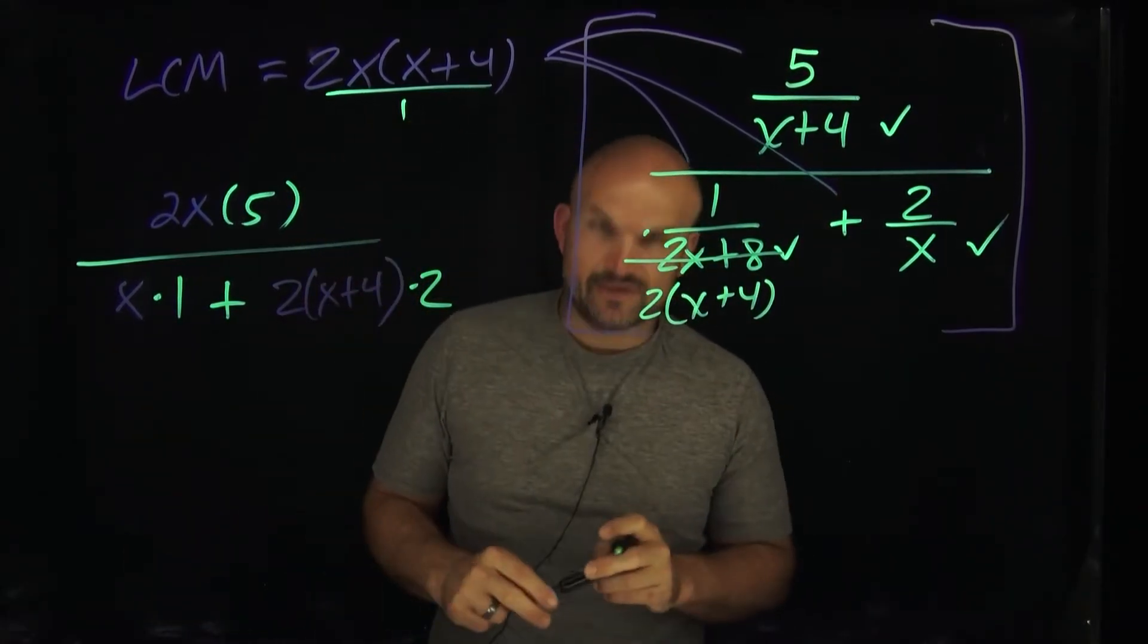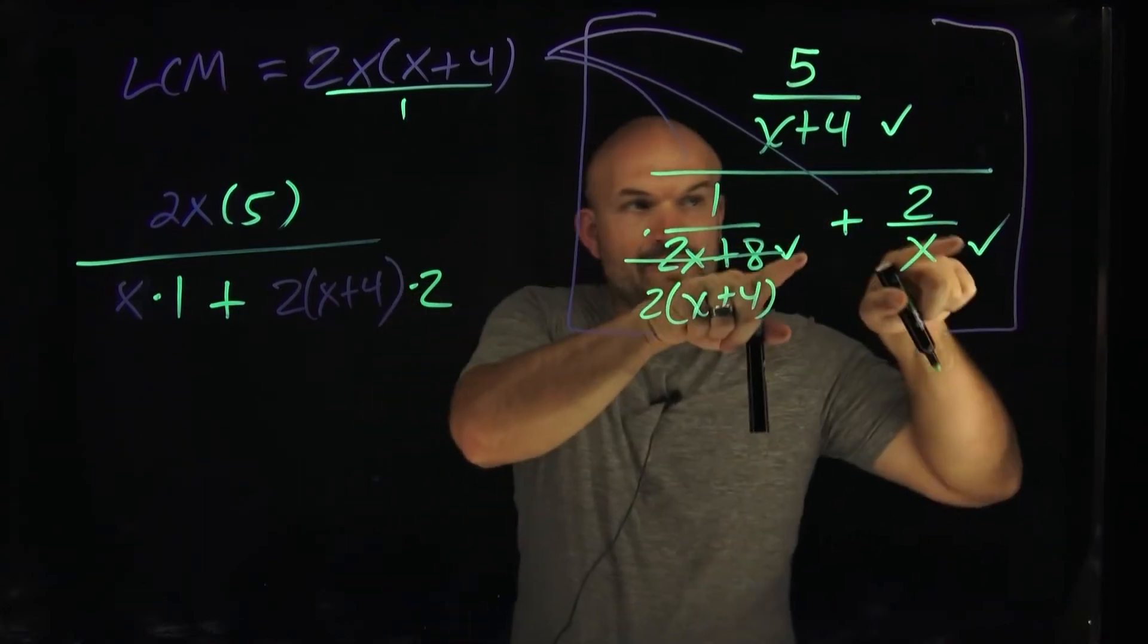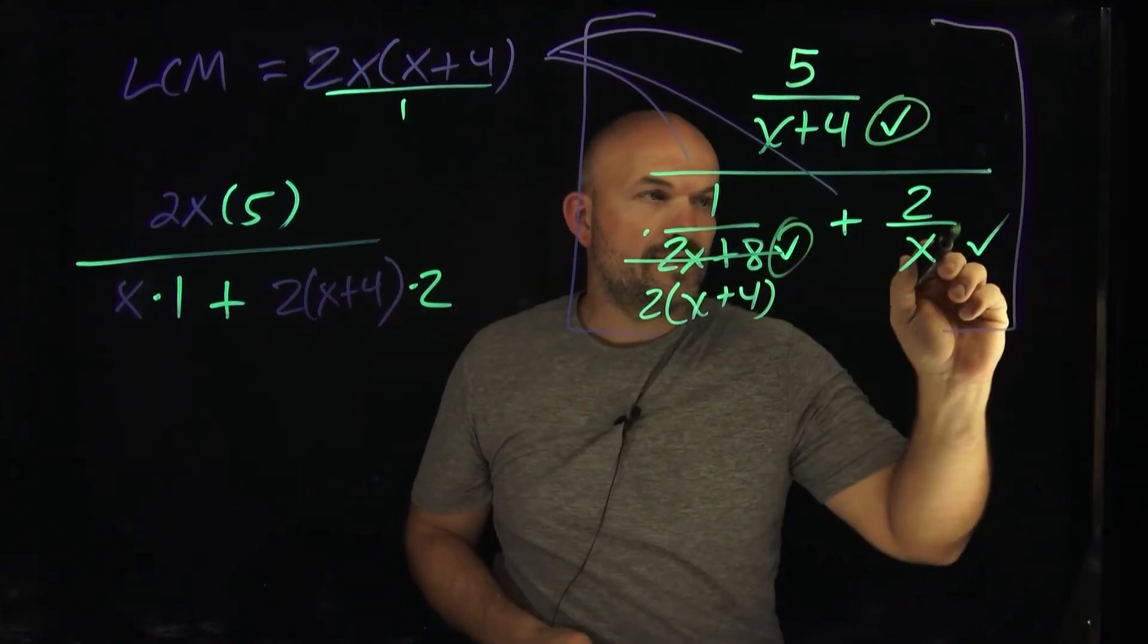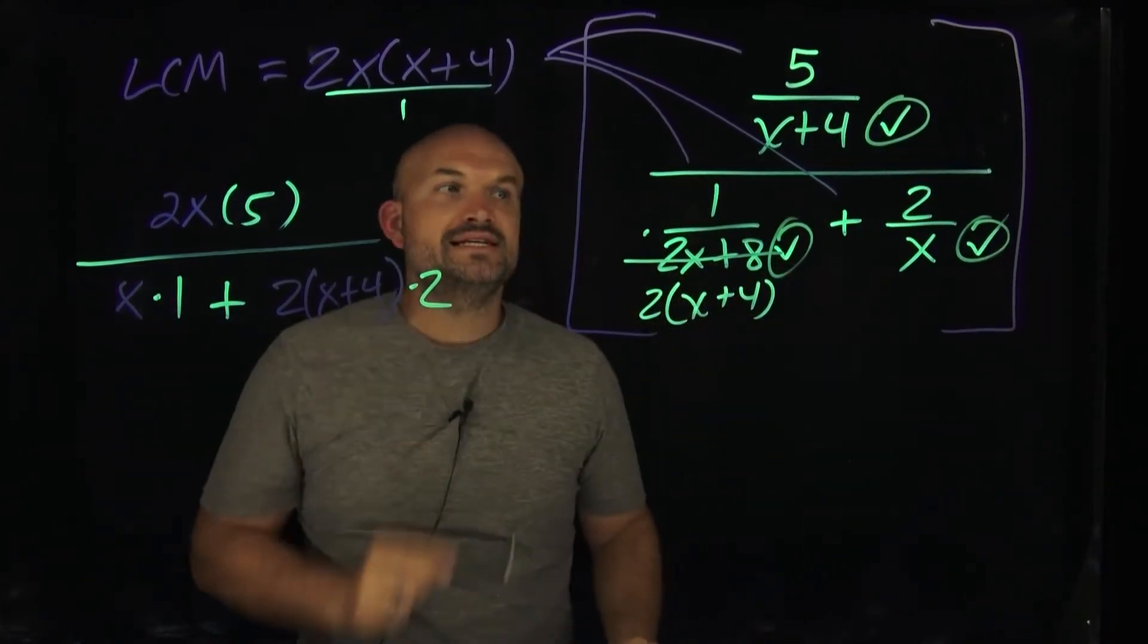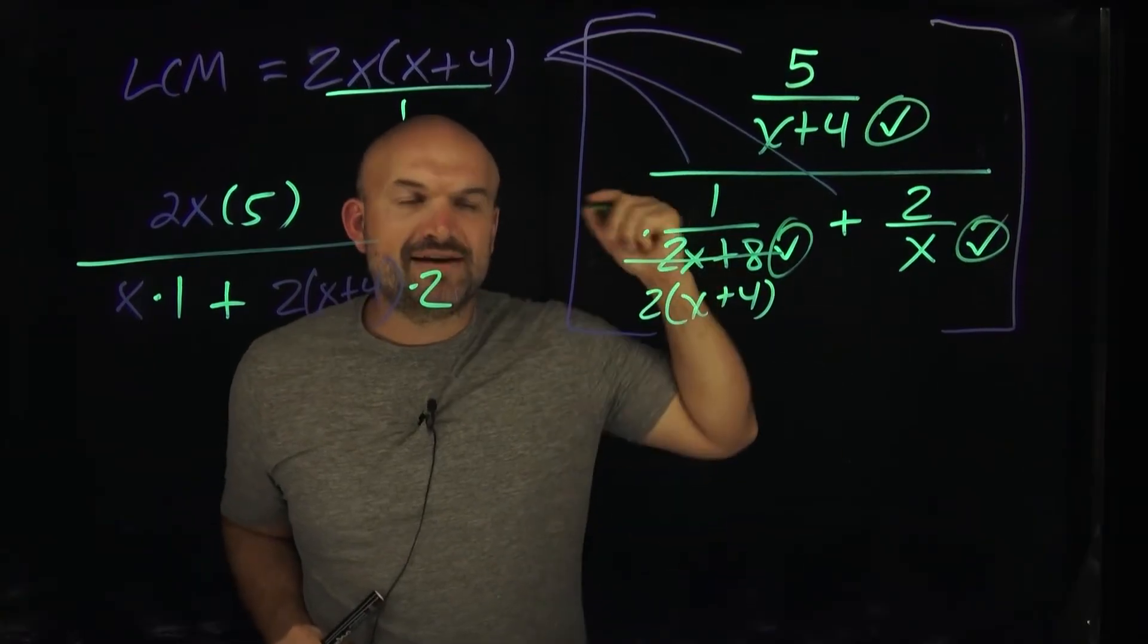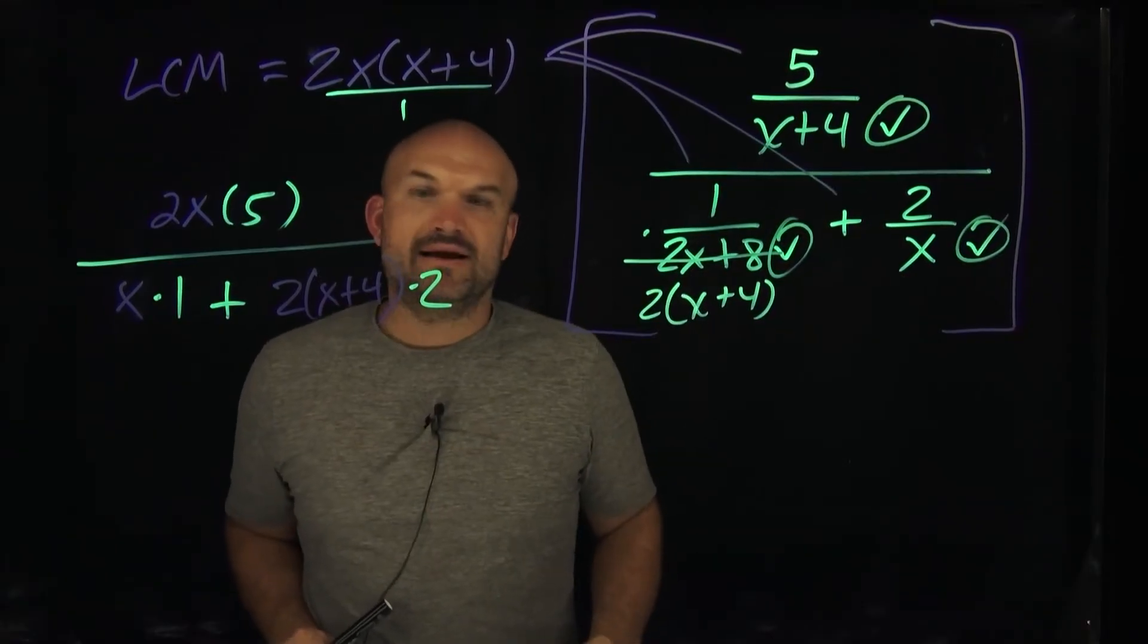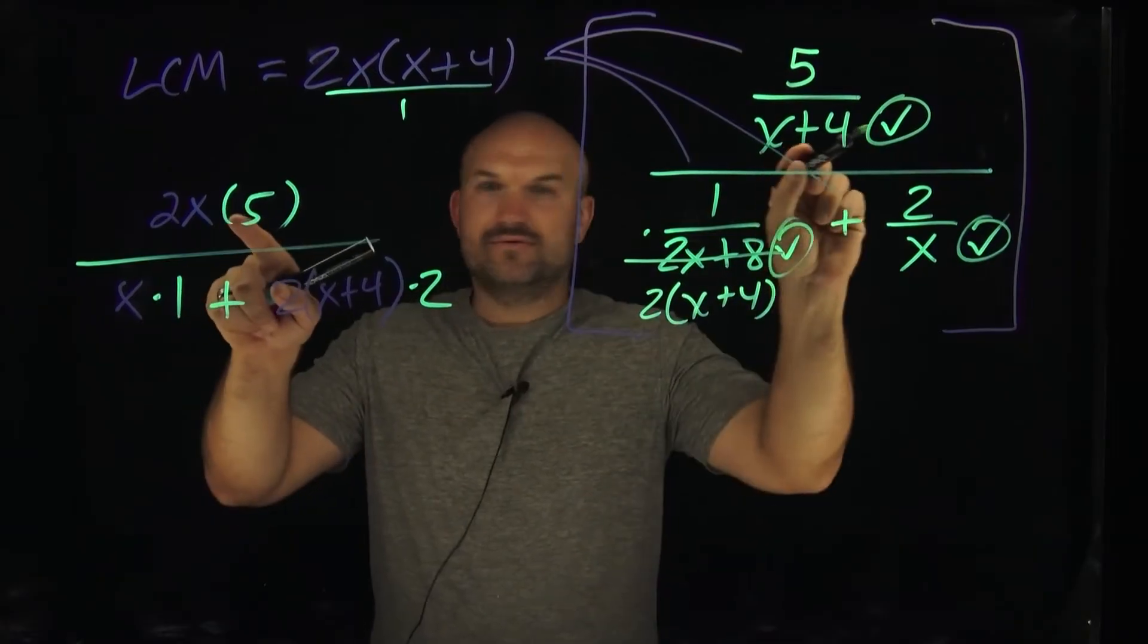So now you can notice here what happens is remember all these denominators that I had? This one, this one, this one. If you multiply your least common multiple correctly, then you will have gotten rid of each and every one of your denominators, right? And notice, I got rid of them.